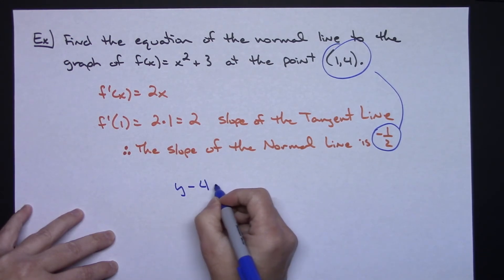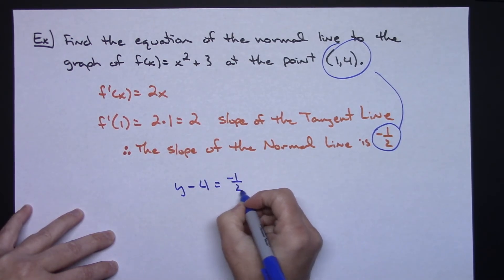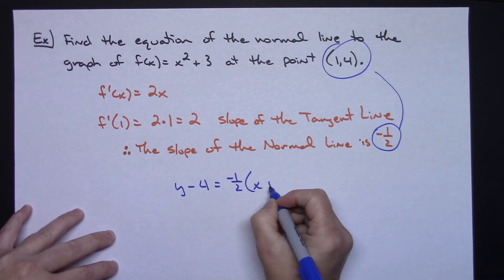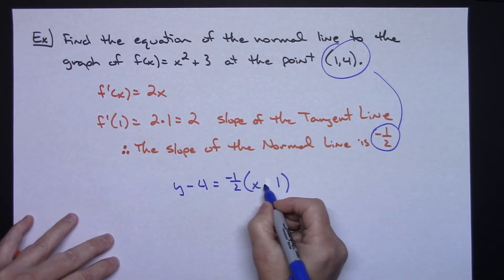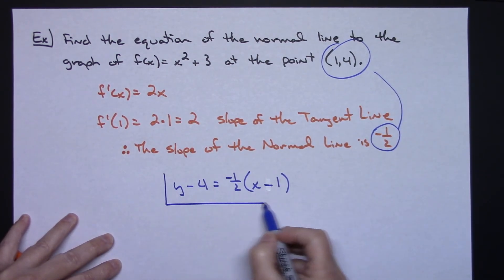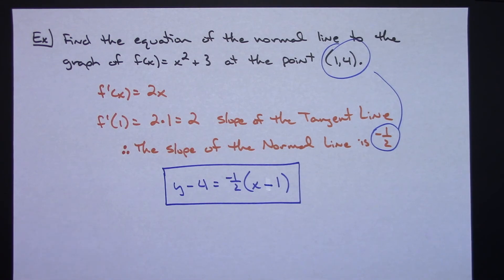So y - 4 = -1/2(x - 1). I almost put a +1 right in there—x - 1. And just going ahead and leaving it in that form since it didn't really say what form it is here.